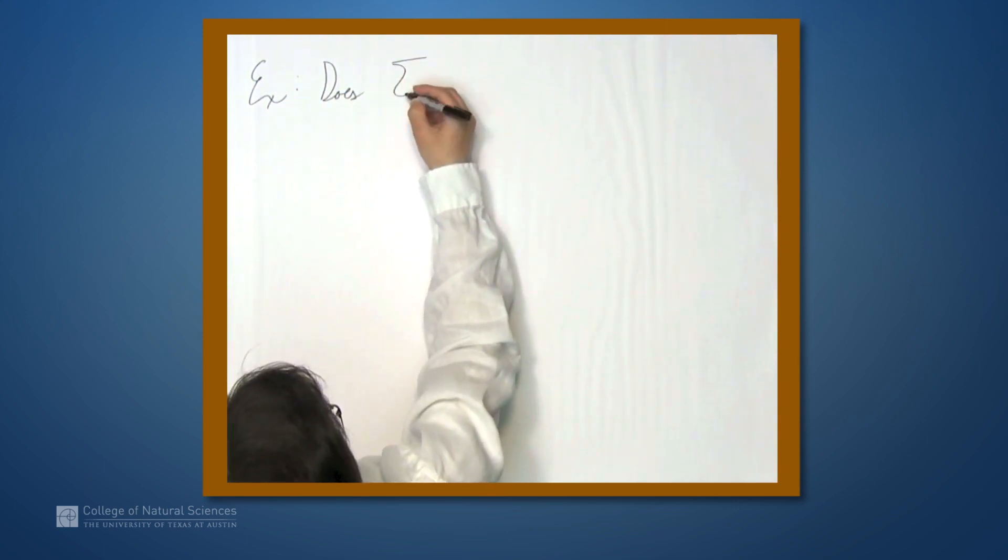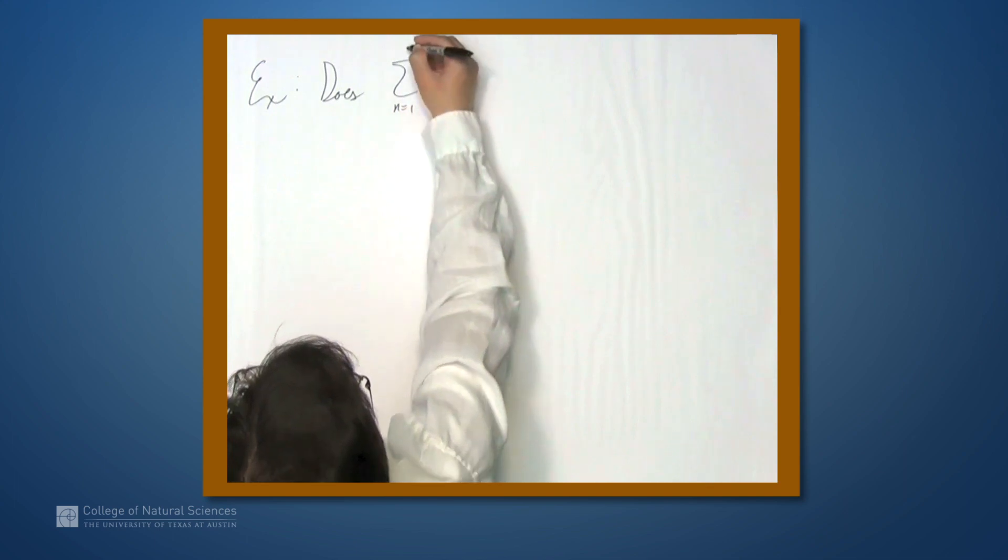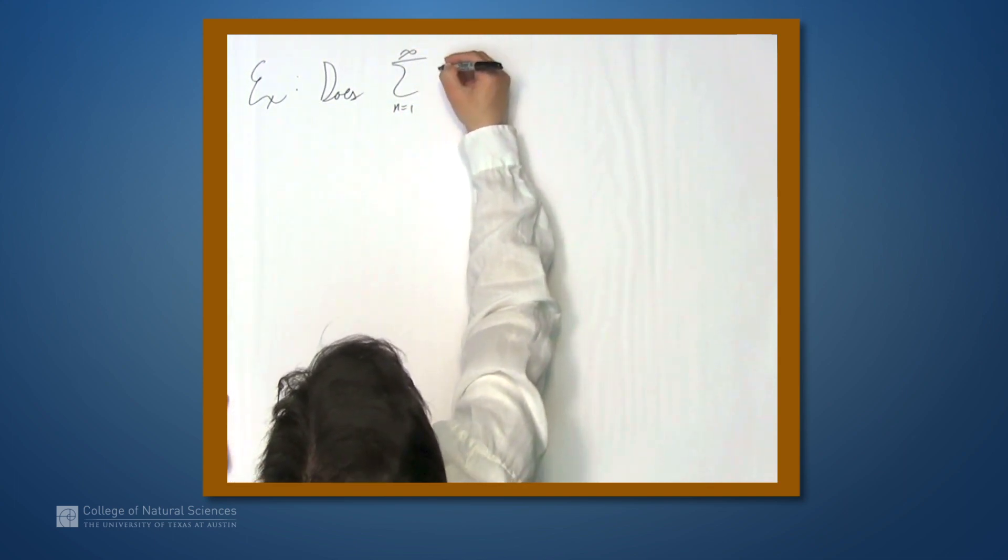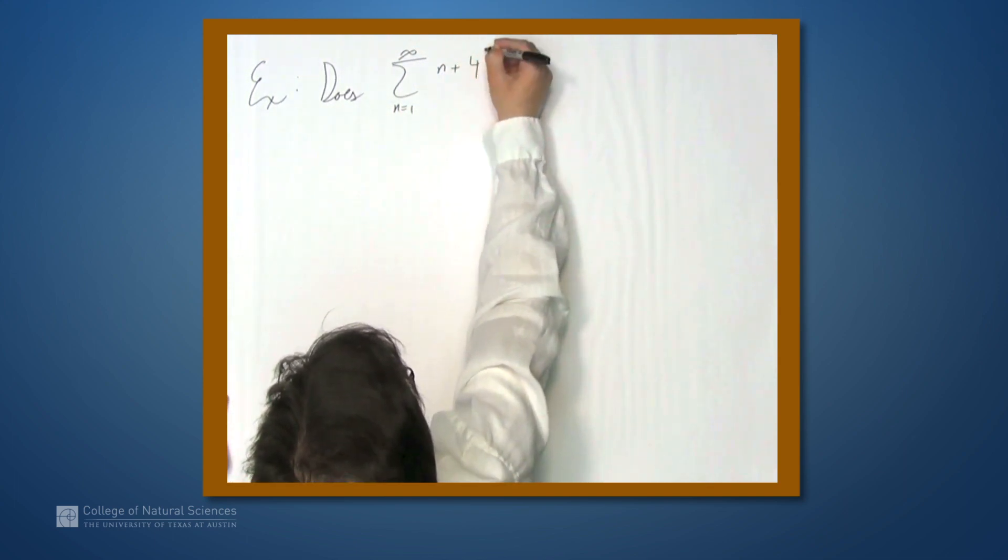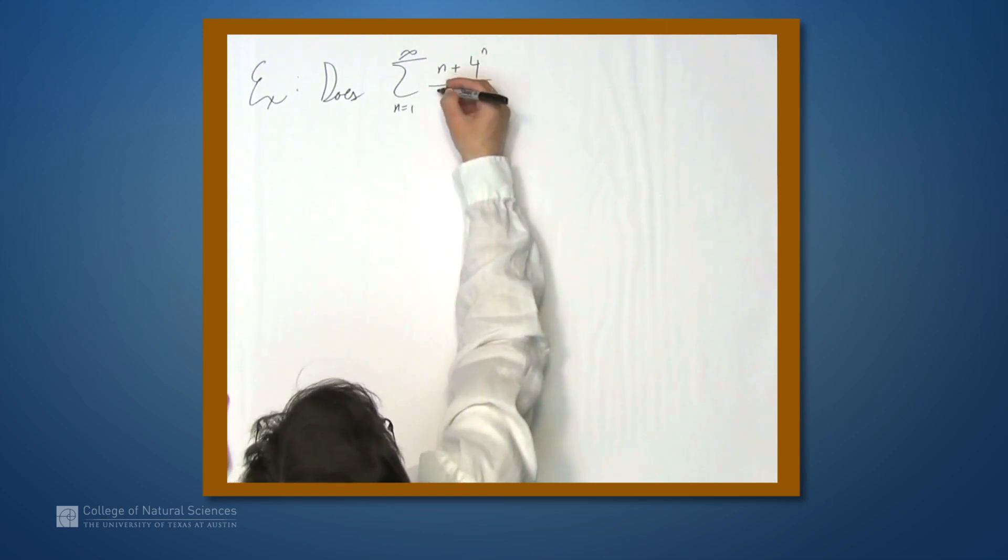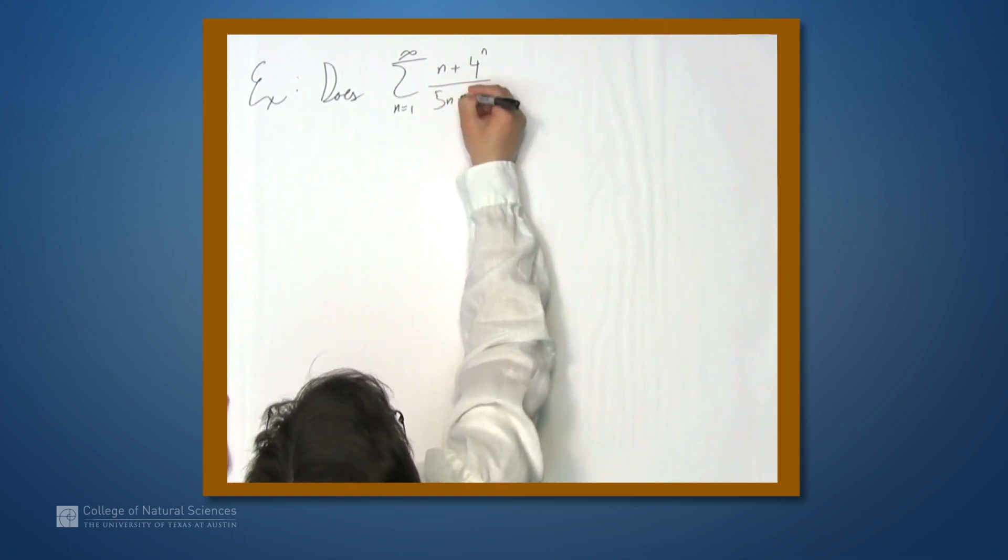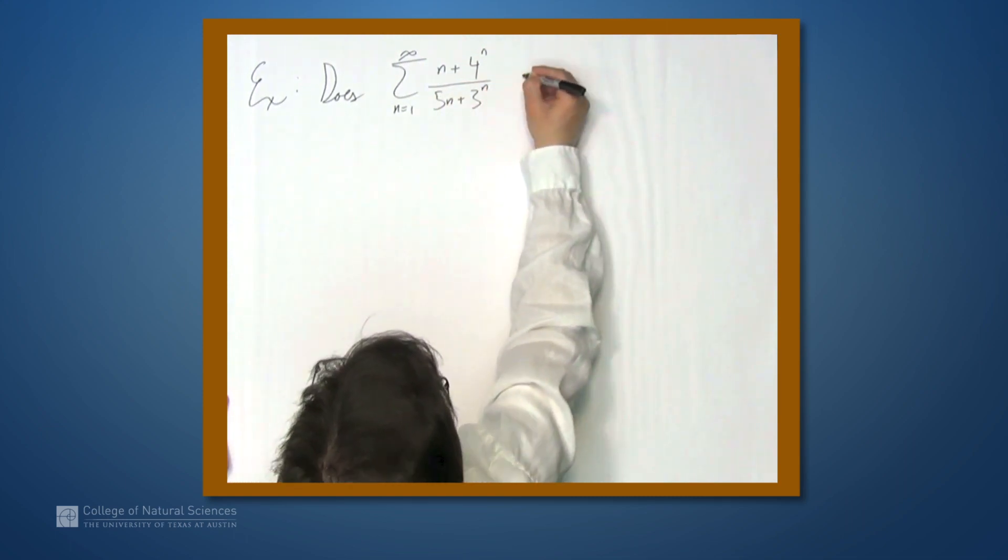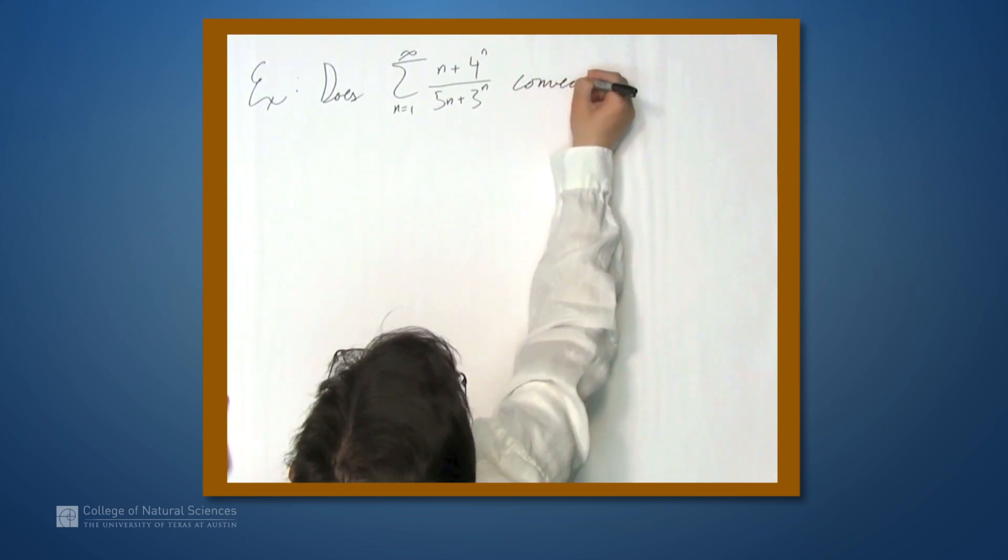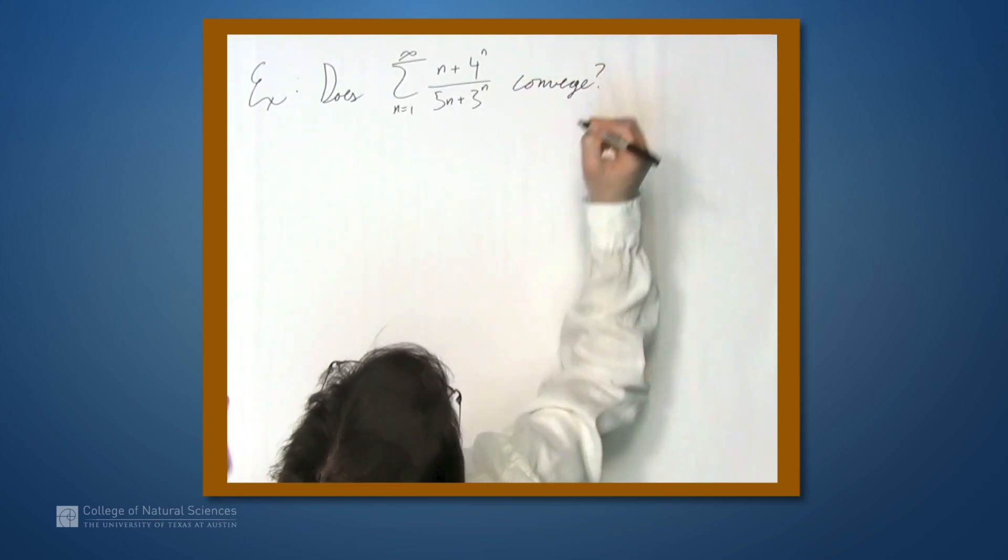Does the series n equals 1 to infinity n plus 4 to the n over 5n plus 3 to the n converge?